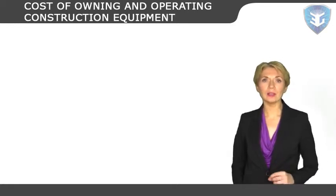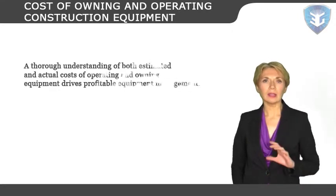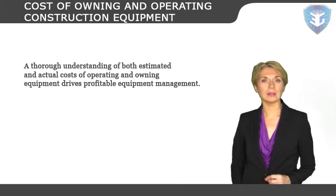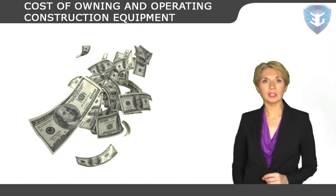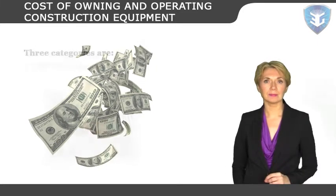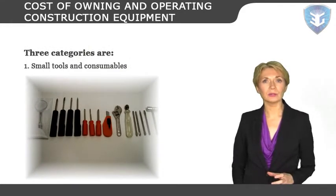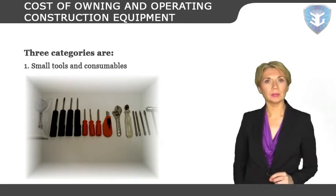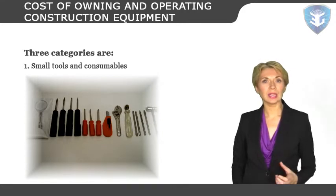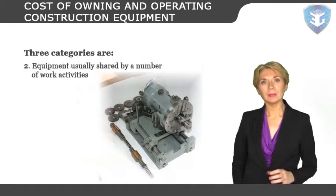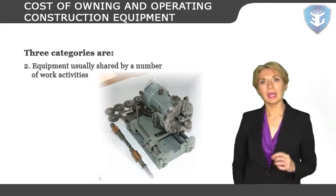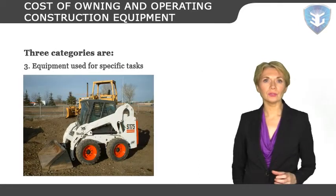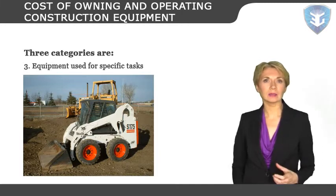A thorough understanding of both estimated and actual costs of operating and owning equipment drives profitable equipment management. Plant, equipment, and tools used in construction operations are priced in three categories: small tools and consumables — hand tools up to a certain value together with blades, drill bits, and other consumables priced as a percentage of total labor; equipment shared by a number of work activities kept at the site over a period of time; and equipment used for specific tasks such as digging trenches or hoisting material.